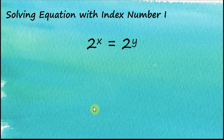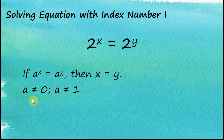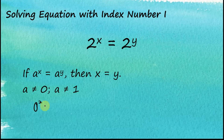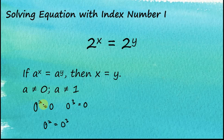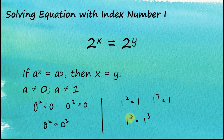We can conclude that if a to the power of x equals a to the power of y, then x must equal y, provided that a is not equal to zero and a is not equal to one. For example, zero squared equals zero cubed even though the indices are different, and one squared equals one cubed even though the indices are different. So this law does not apply when a equals zero or a equals one.